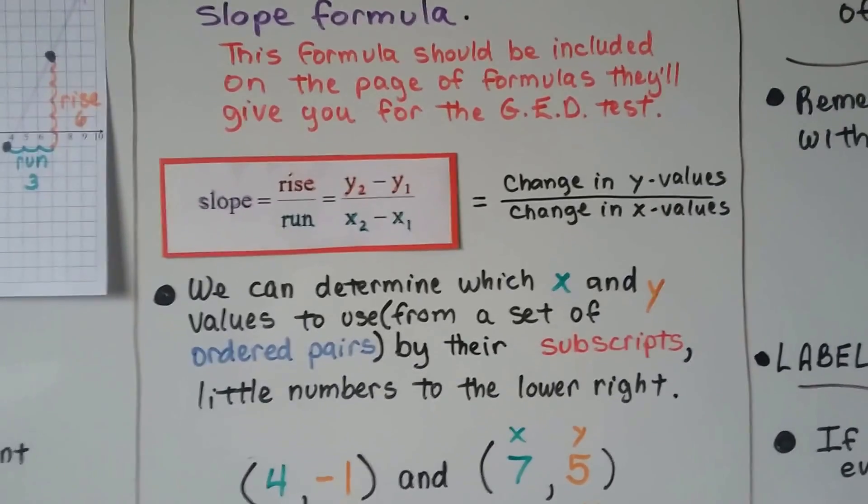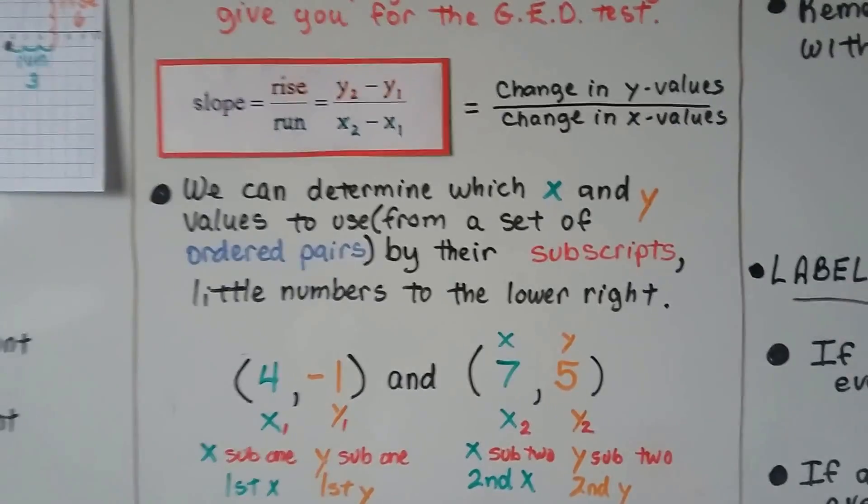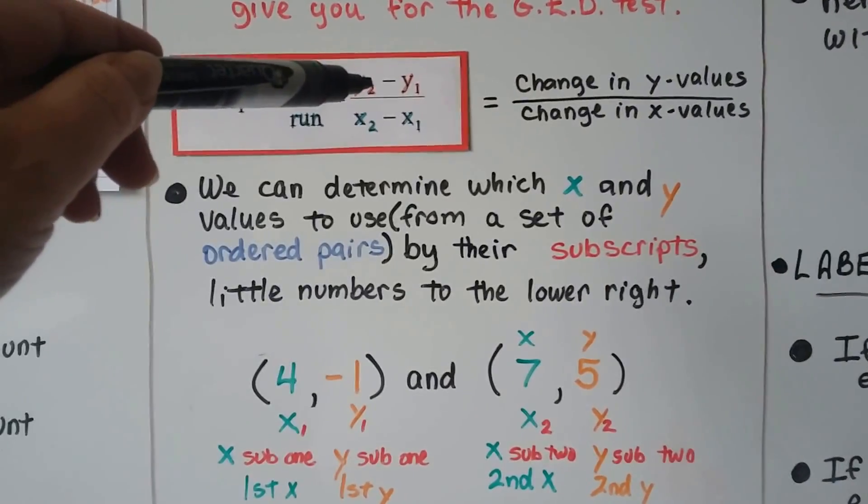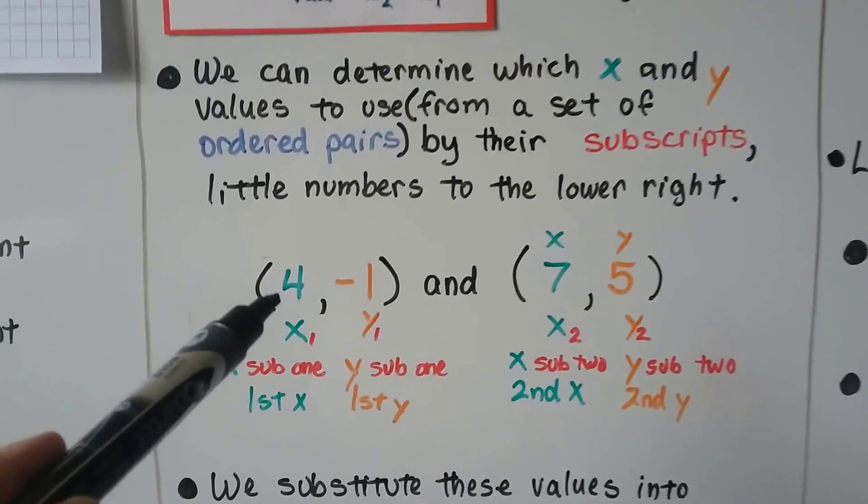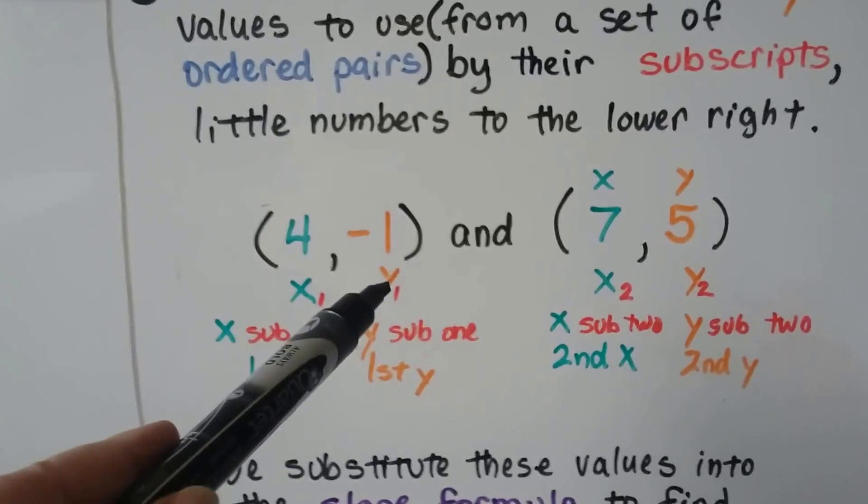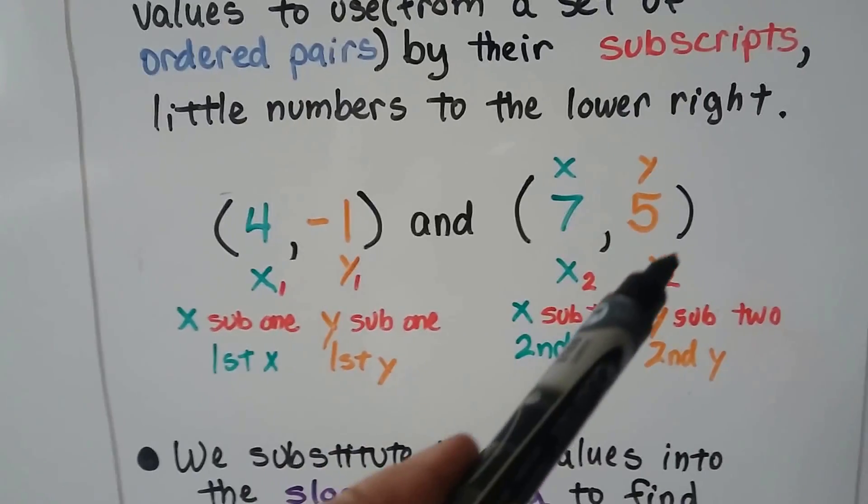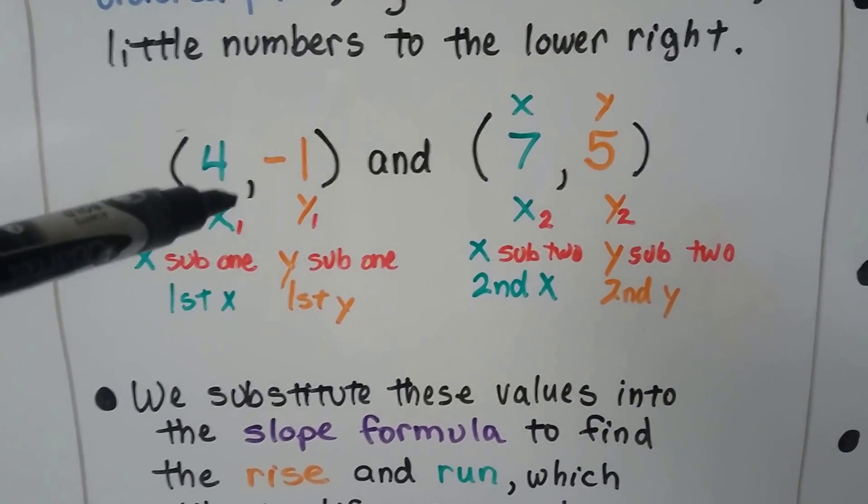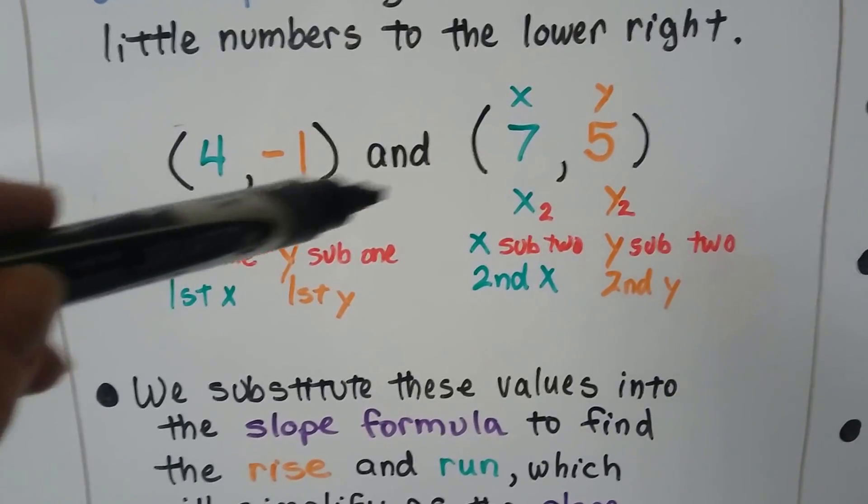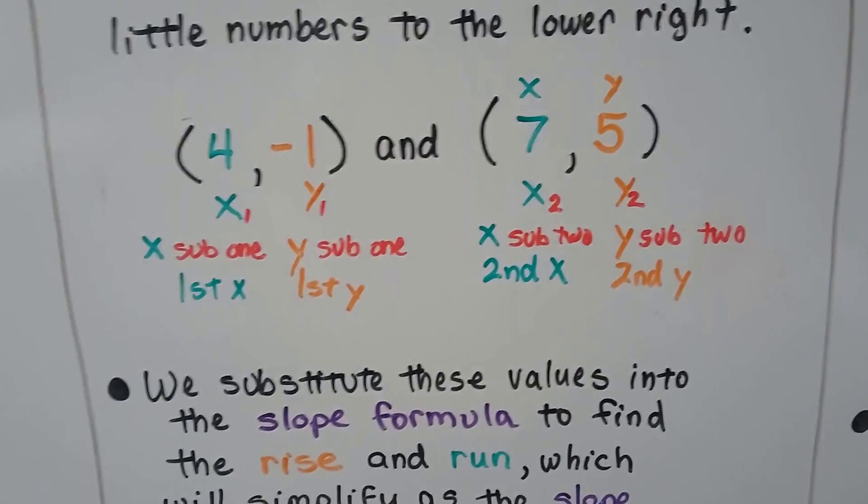This little two, this little one, little numbers on the lower right. So this is saying the second y minus the first y. Here is the first x and the first y, the second x and the second y, and the way you read the subscripts are x sub 1, y sub 1, x sub 2, y sub 2.